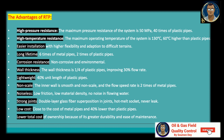Wall thickness is one-fourth of plastic pipes, improving 30 percent of flow rate. Lightweight: 40 percent of unit length of plastic pipes. Non-scale: the inner wall is smooth and non-scale, and the flow speed rate is two times that of metal pipes. Low friction, low material density, no noise in the flowing water. Strong joints: double layer glass fiber superposition in joint, hot melt socket, never leaks. Low cost: close to the cost of metal pipes and 40 percent lower than plastic pipes, with lower total cost of ownership because of greater durability and ease of maintenance.